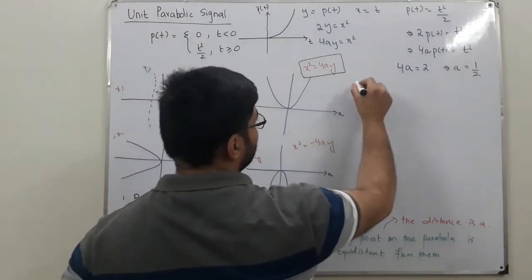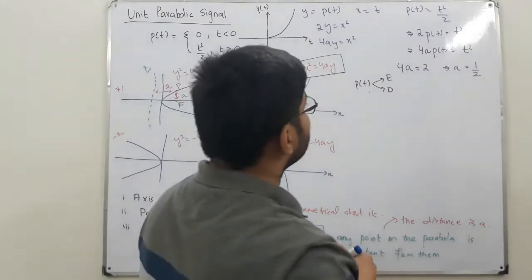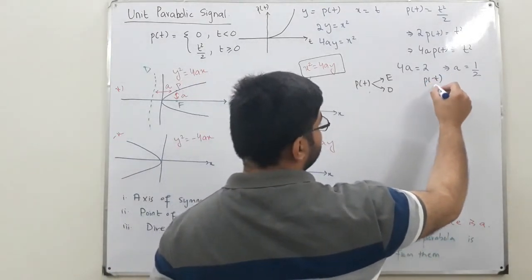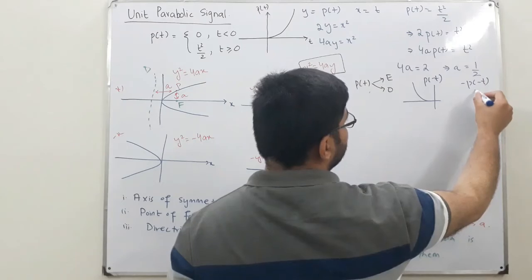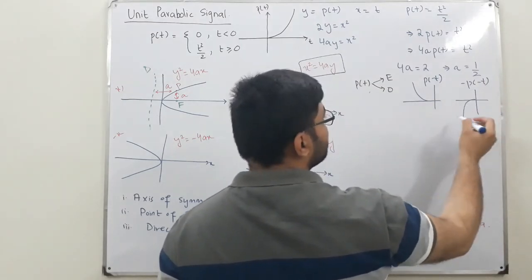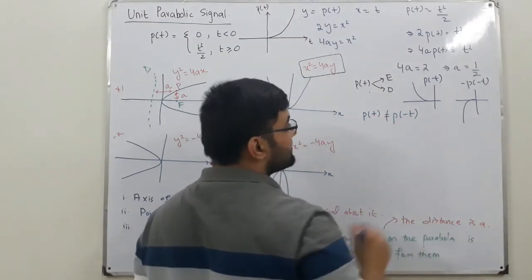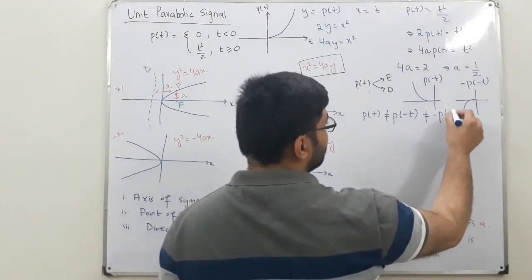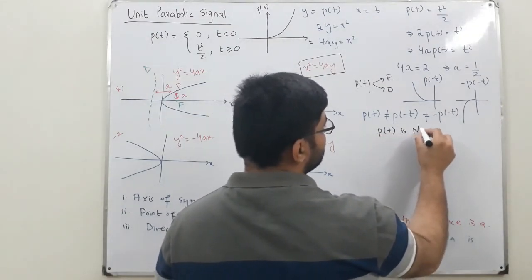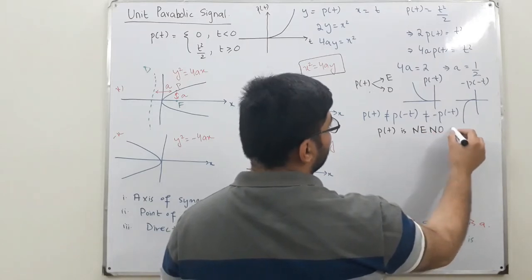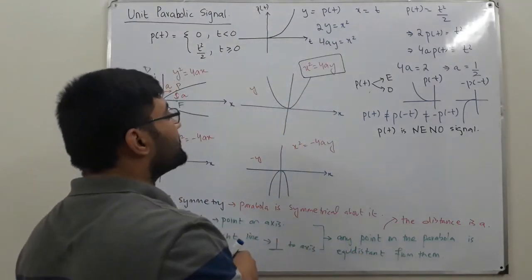Now let's check whether P(T) is even or odd. P(−T) is obtained by flipping the signal around the y-axis, and −P(−T) by then flipping around the x-axis. Since P(T) is not equal to P(−T), the condition for even is not satisfied. And since P(T) is not equal to −P(−T), the condition for odd is also not satisfied. Therefore, P(T) is neither even nor odd.